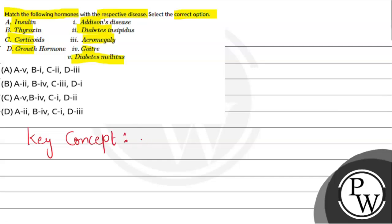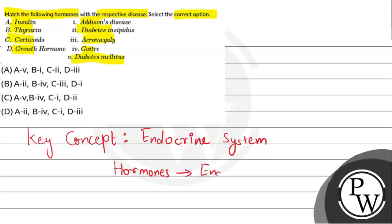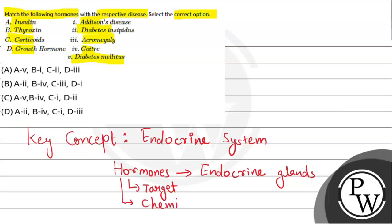The key concept here is the endocrine system. The endocrine system is a system in which chemical messengers called hormones are produced. Endocrine glands produce hormones and secrete them directly into the blood, allowing hormones to reach their target site. Hormones are the chemical messengers of the body.